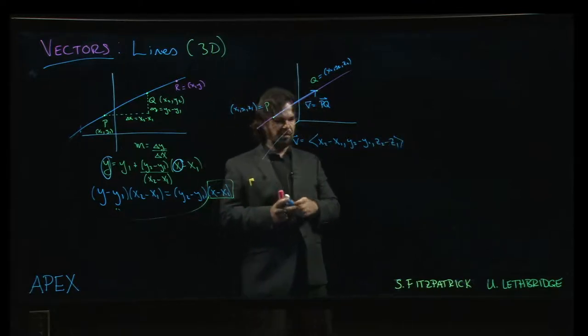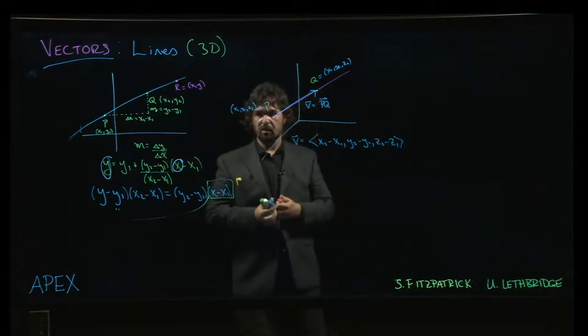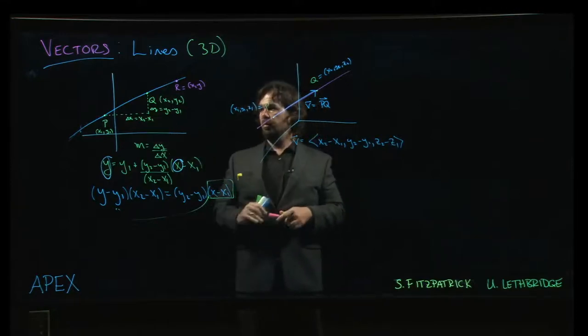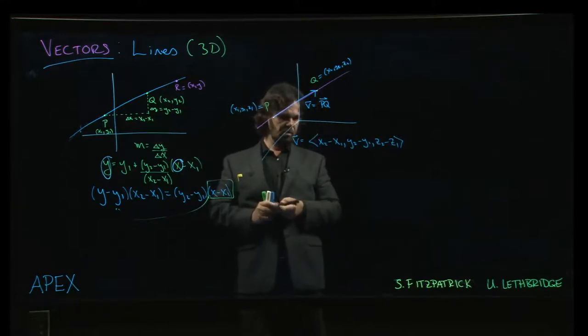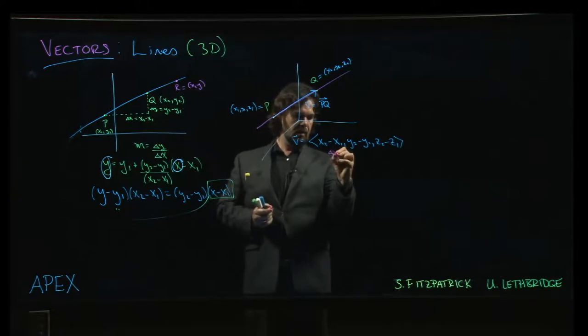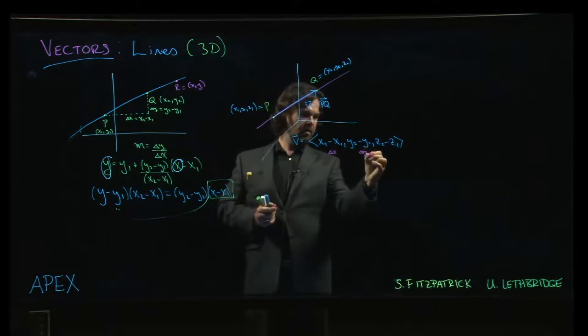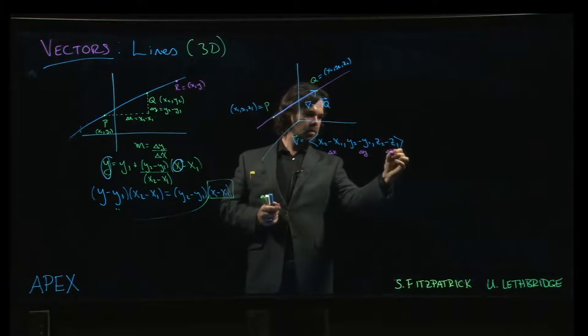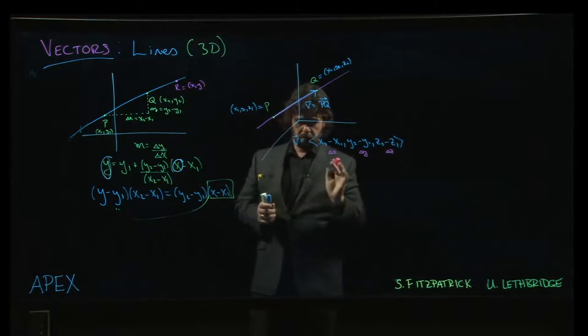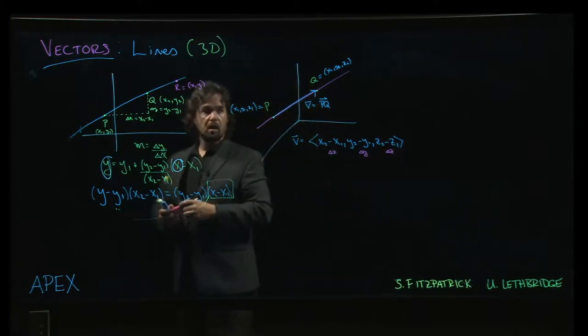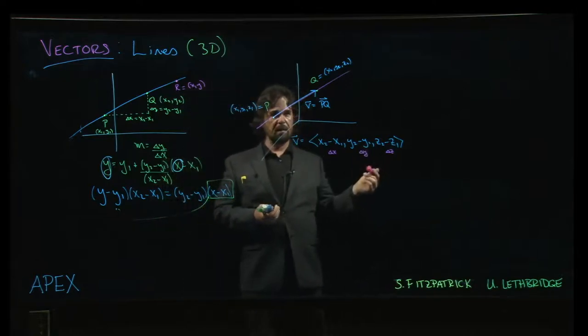And notice that this vector, it does contain a lot of this sort of similar information to what we have over here in the two-dimensional scenario. We have our delta x, we have our delta y, we have our delta z. We have all those in place. So, where do we go from there?